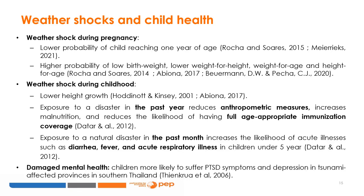Weather shocks experienced when in utero lower the probability of the baby surviving to complete their first year of life. Merex, 2021, shows that an increase in temperatures by 1 degree Celsius in less developed countries leads to an increase of 2.25 per 1,000 live births in the number of children dying before completing their first year of life. Rocha and Suarez, 2015, find similar results in Brazil where negative rainfall shocks imply higher infant mortality, shorter gestation periods, and lower birth weights. In Jamaica, babies who experienced hurricanes or tropical storms in utero are more likely to have low birth weights, according to Behrman and Pesha, 2020, and also keep presenting worse anthropometric measures — weight for age, weight for height, and height for age — during the first five years of life.